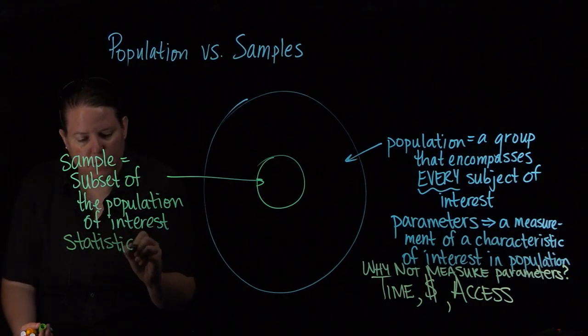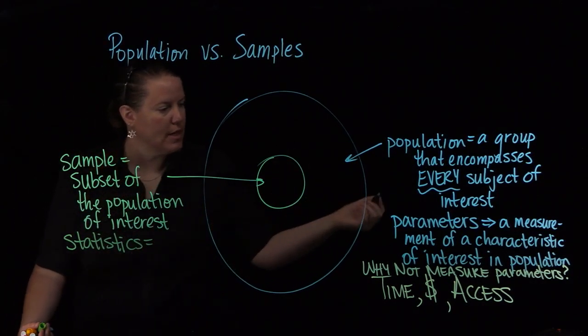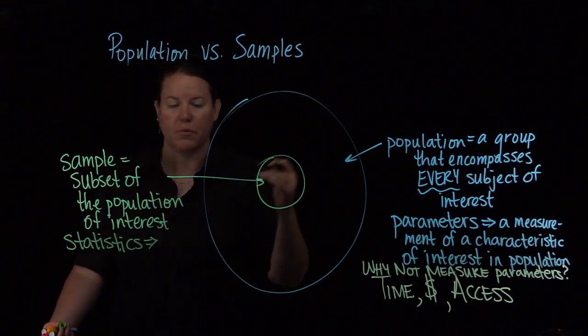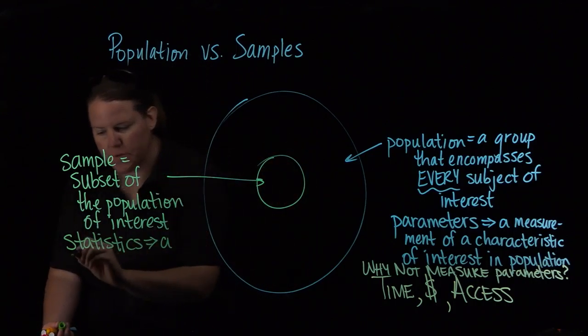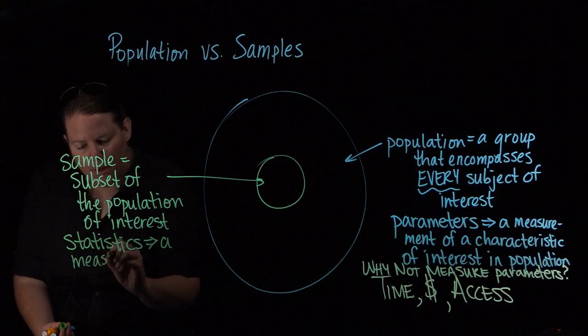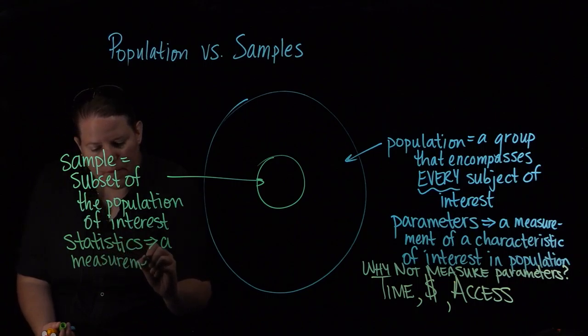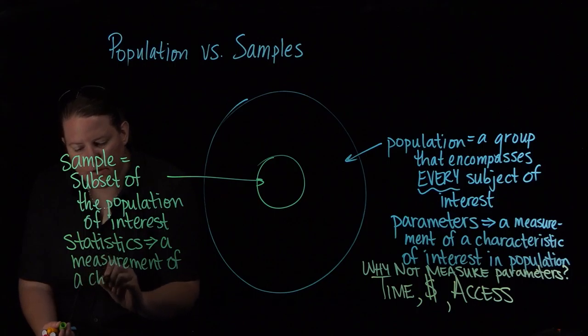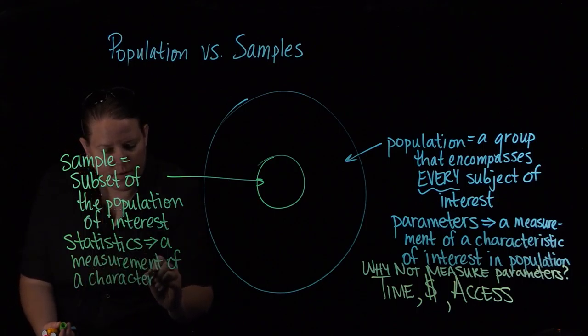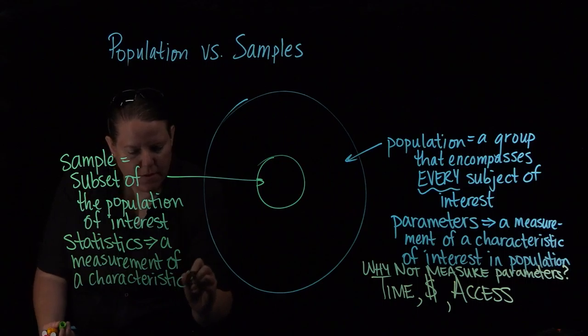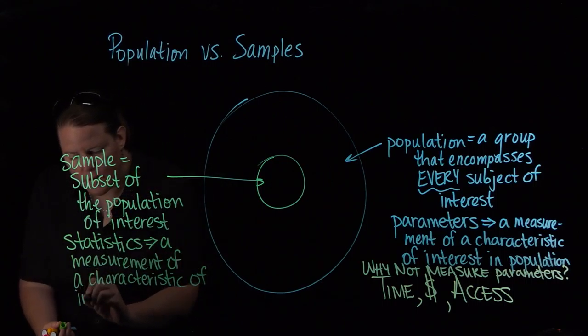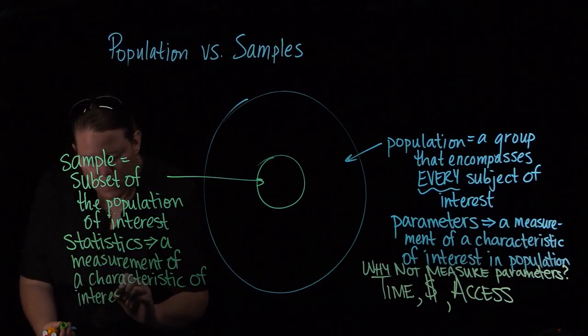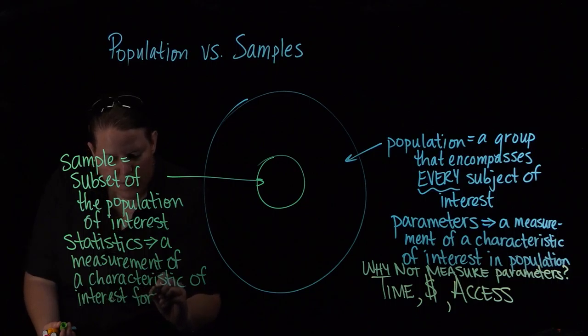Those are called statistics. So statistics are exactly the same thing as parameters except for the sample. They're a measurement of a characteristic. I'm trying to use the exact same definition, which is why I'm looking over there, characteristic of interest for the sample.